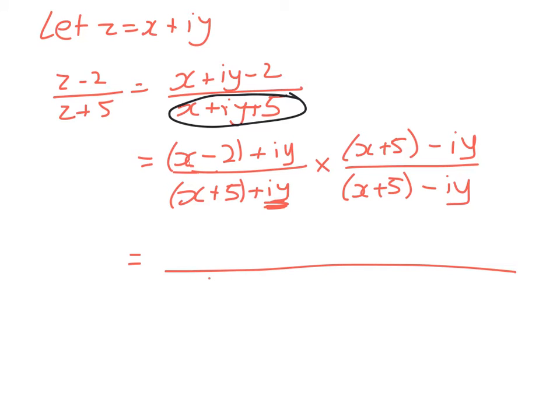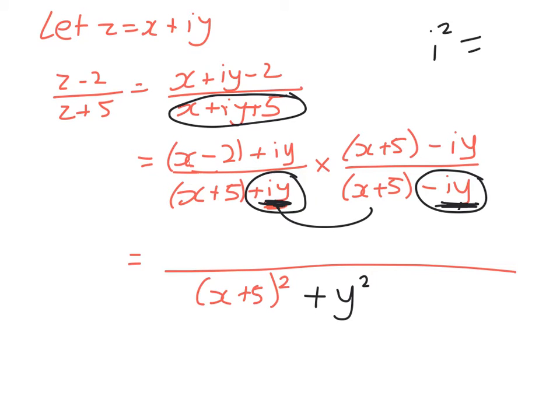So the denominator will now be x plus 5 squared plus iy times that minus iy times that, which is going to cancel. But plus iy times minus iy gives me plus y squared. I'm always getting this pattern when I multiply by the conjugate and I'll end up with a plus y squared because i squared, of course, is equal to negative 1.